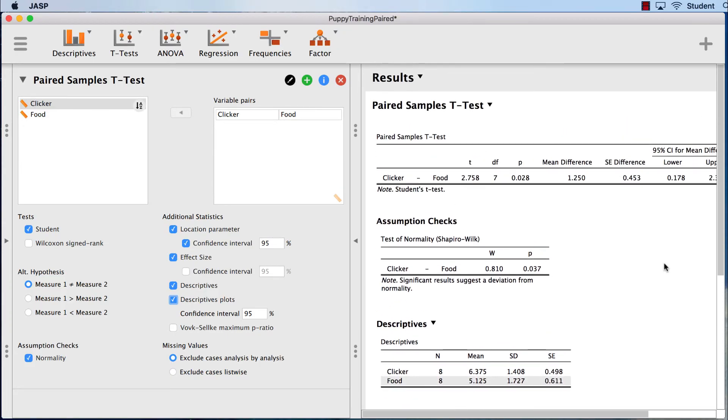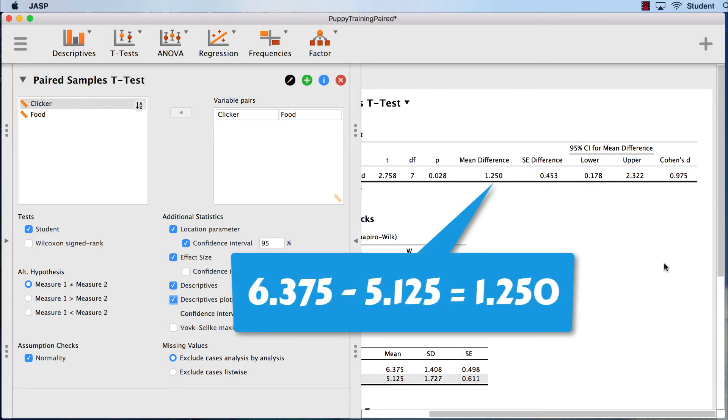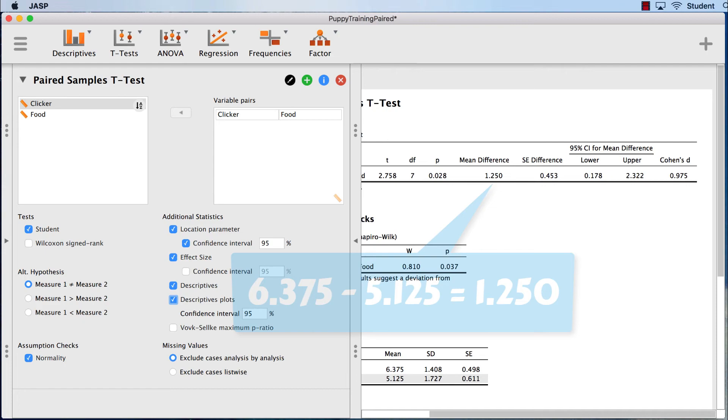We see the t-test results, the probability, and the mean difference. If you subtract the food mean from the clicker mean, the difference between those two means would be 1.25. We have our confidence intervals, and out here to the right, we see the effect size. The Cohen's D is a 0.975. We'll round that up to a 0.98.